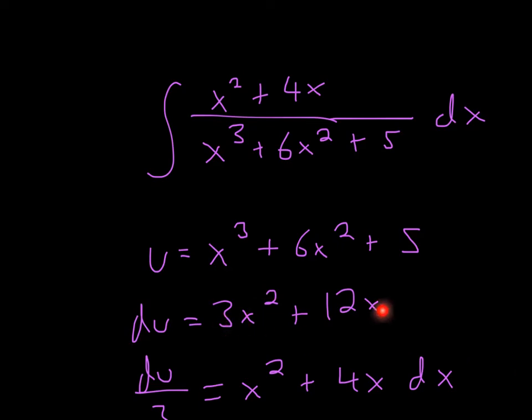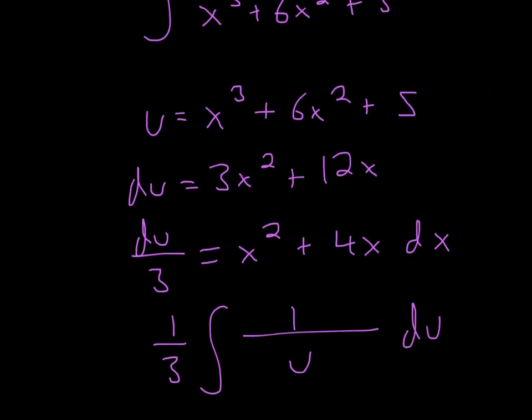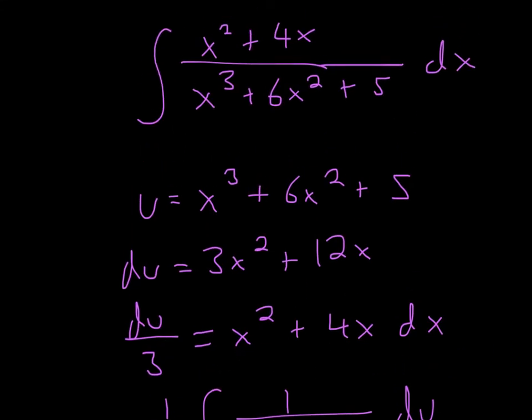So we look to see if that's what we have in the actual integral. We don't have this 3 in front, but we do have x squared plus 4x. So what we can do is just divide both sides by 3. So it's du divided by 3, so it'll get x squared plus 4x, and that we actually do have.